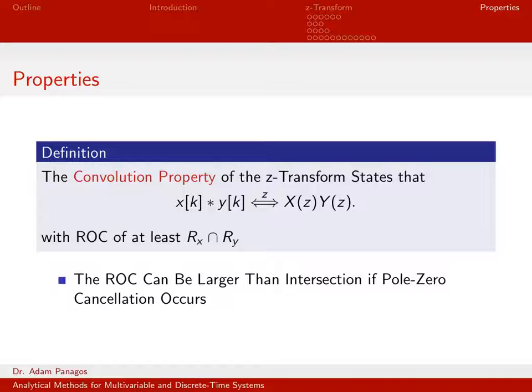We also looked at what happened when you multiplied a discrete time signal x of k by an exponential sequence alpha to the k. We saw what happened in the z-domain for that operation. We're going to continue doing similar things. In this video, we want to look at certain properties of the z-transform.